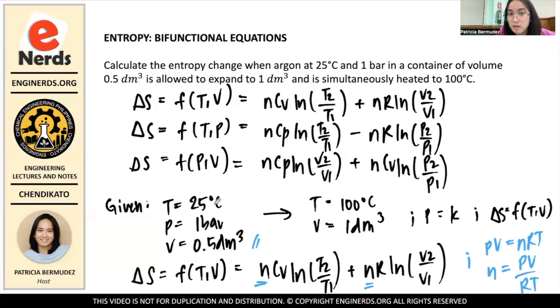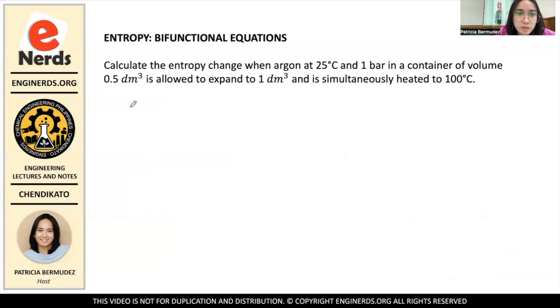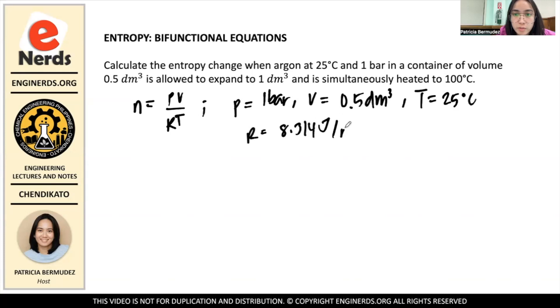So N is PV over RT. And I know that your P is 1 bar, and then your volume is 0.5 dm³, and your temperature is 25 degrees Celsius. And for this one, we use R equals 8.314 J per mole Kelvin.